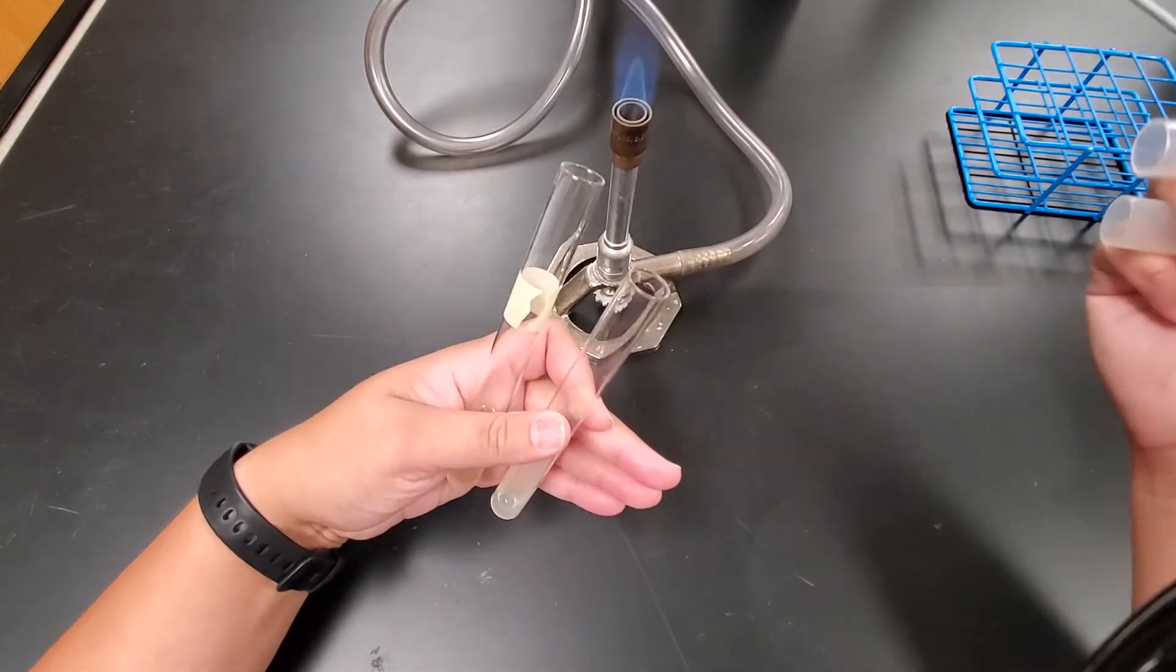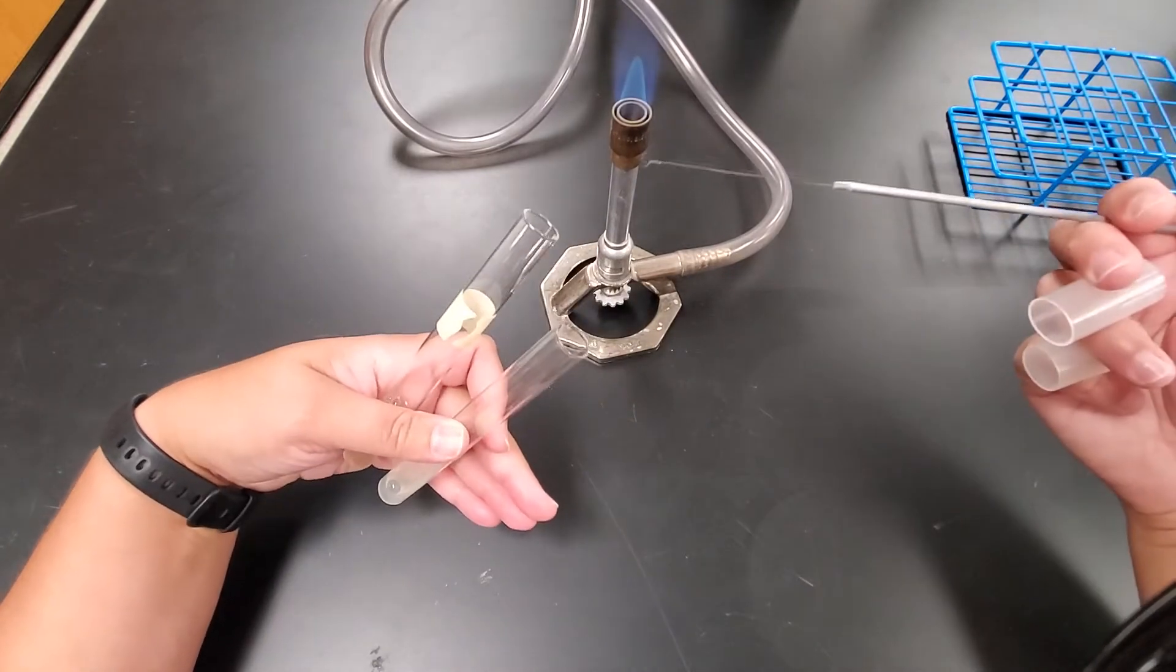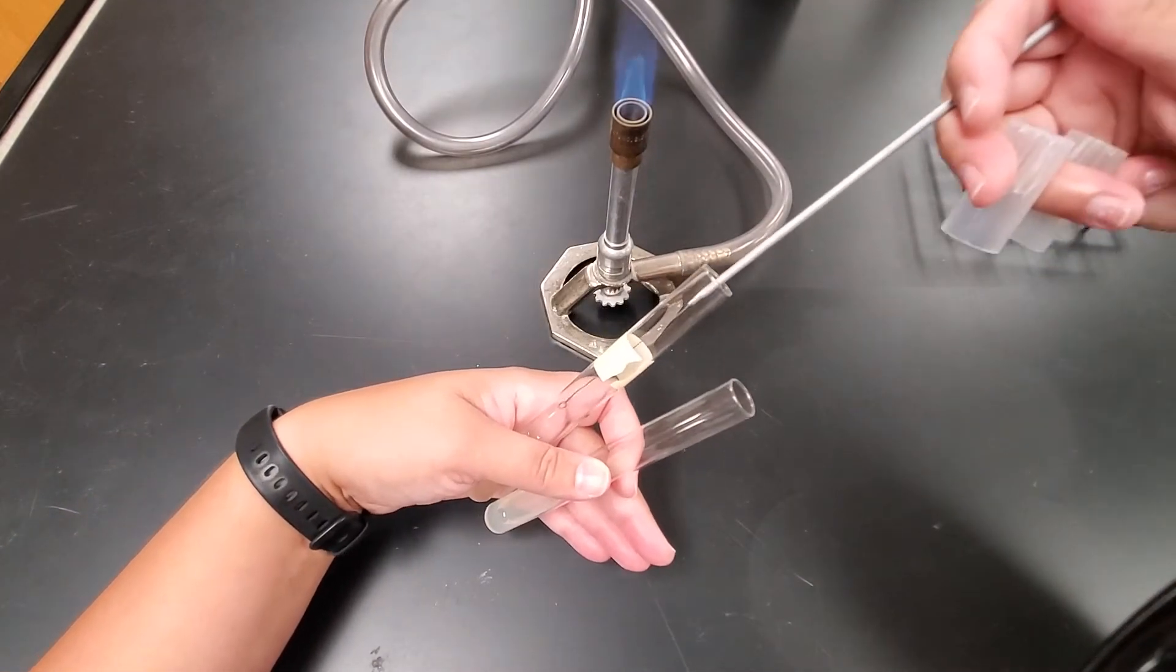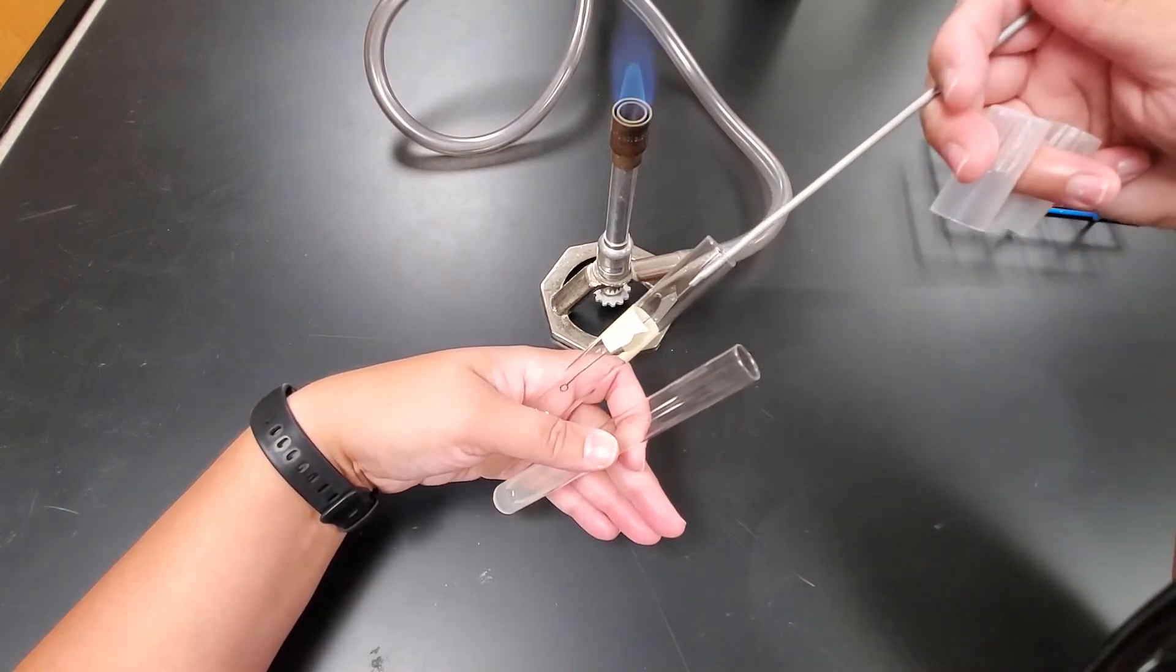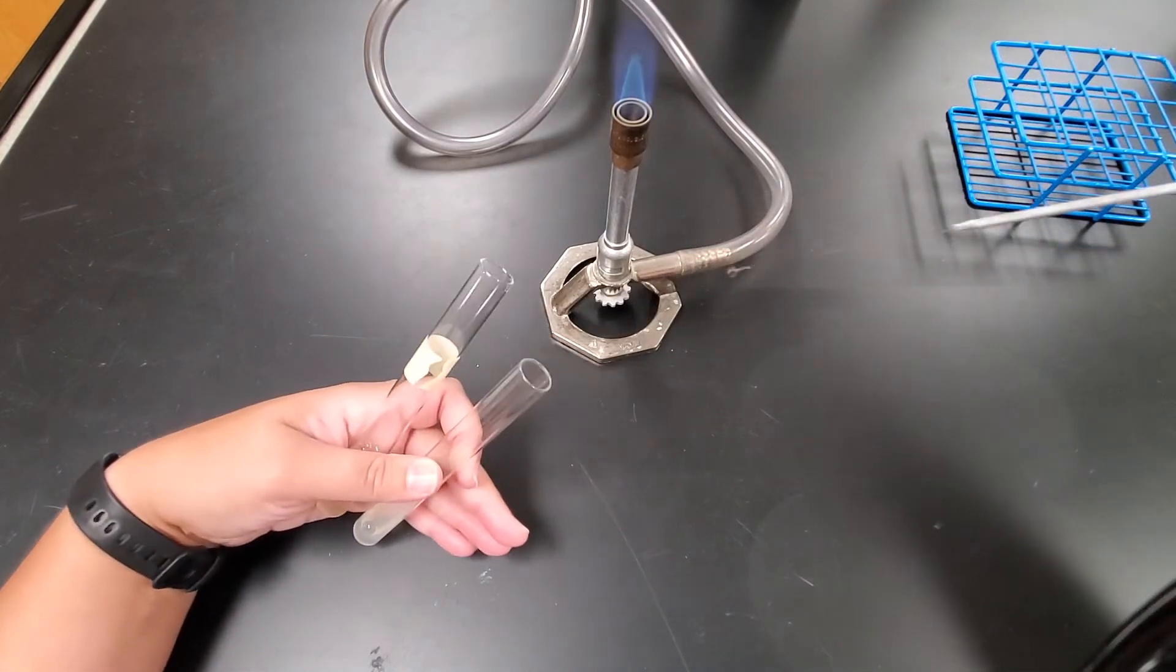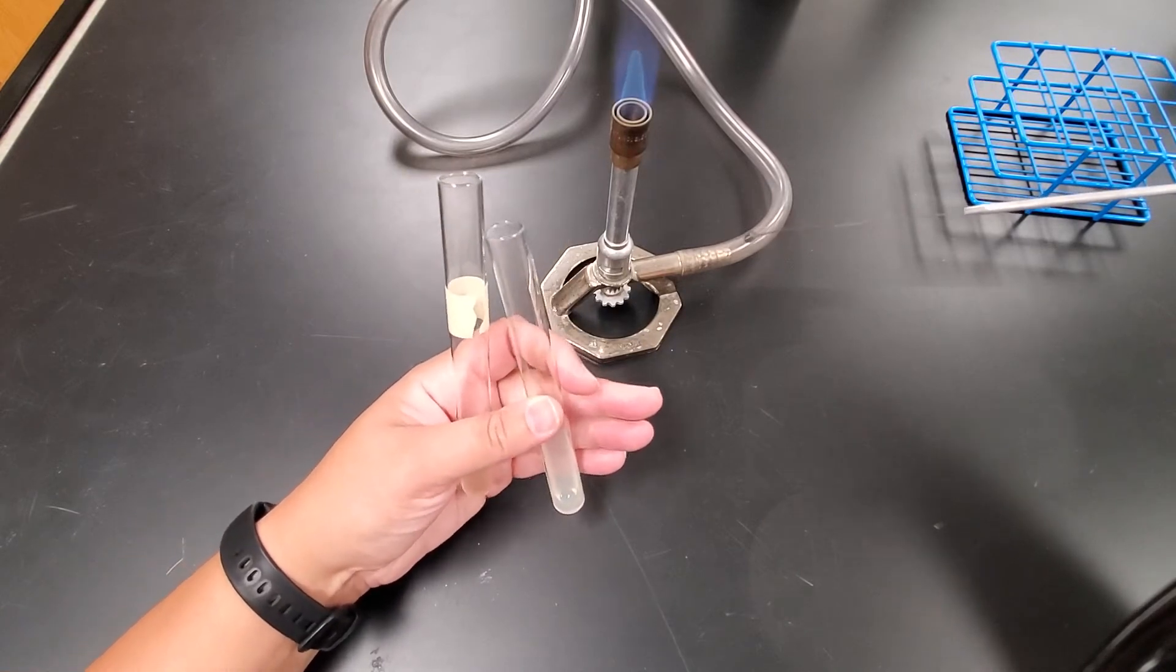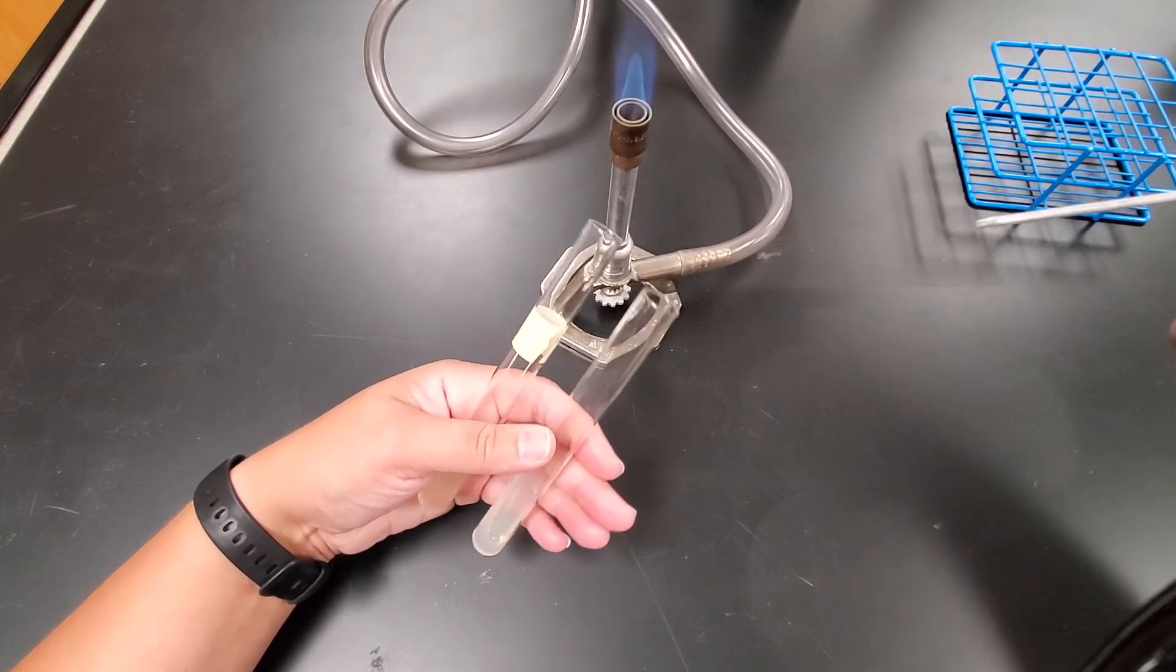So now my loop has been flamed. That's probably cool by now. So all I need to do is just go in there and grab a small sample. And what I mean by small sample, there's going to be a little bit of a shimmer on that. That's indicating that I've got now that sample.